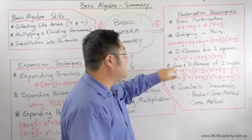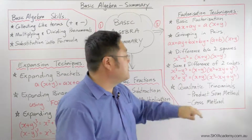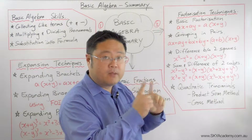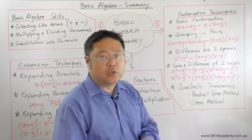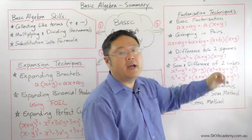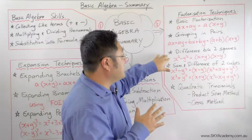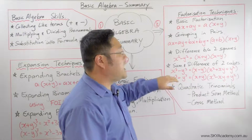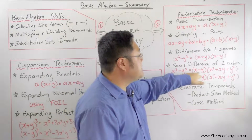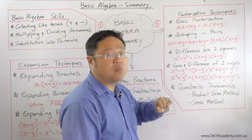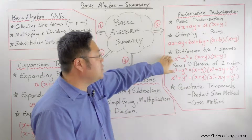We also looked at the difference of two squares: x² − y², where you have two squared terms with a minus between them. This factorizes into (x + y)(x − y). We also looked at the sum and difference of two cubes: x³ − y³ becomes that expression, and x³ + y³ becomes that expression.